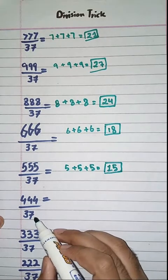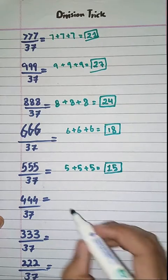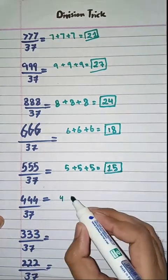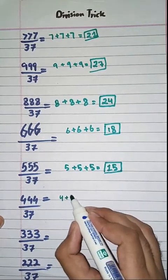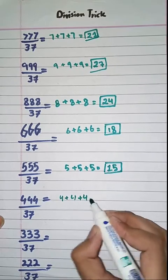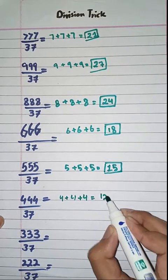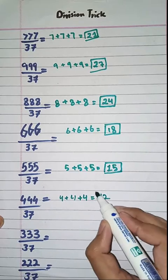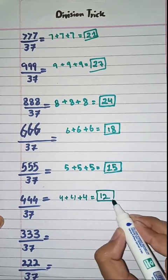Next one: 444 divided by 37. Simply we have to add the digits of this number: 4 plus 4 plus 4, and their sum is equal to 12. So 444 divided by 37 is equal to 12.